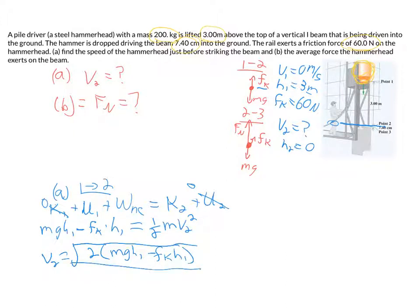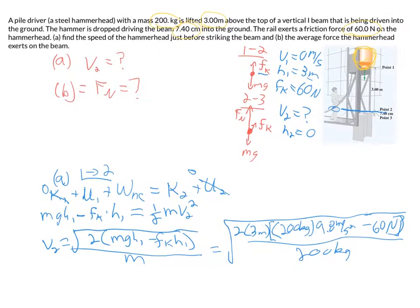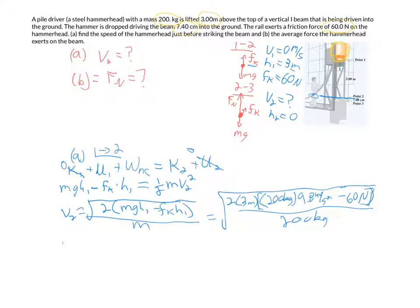So V2 then is just going to be equal to the square root of 2 times MGH1 minus the force of friction times H1, all divided by M. So if you plug in your numbers, 2 times 3 meters times 200 kilograms times 9.8 meters per second squared minus the 60 Newton force of friction, and we divide all of that by 200 kilograms. After taking the square root, what you should find is that V2 is equal to 7.55 meters per second. That's part A.